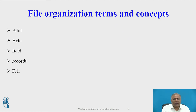First, we have to define some terminologies and basic concepts of file organization. A bit represents the smallest unit of data a computer can handle. A group of bits, called a byte, represents a single character, which can be a letter, number, or any other symbol. A grouping of characters into a word, a group of words, or a complete number — such as a person's name or age — is called a field.